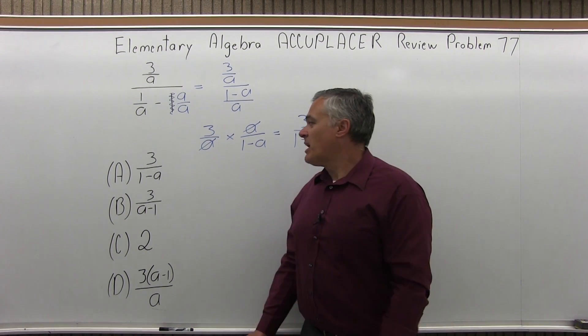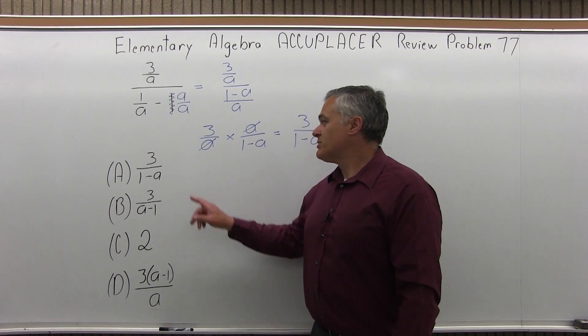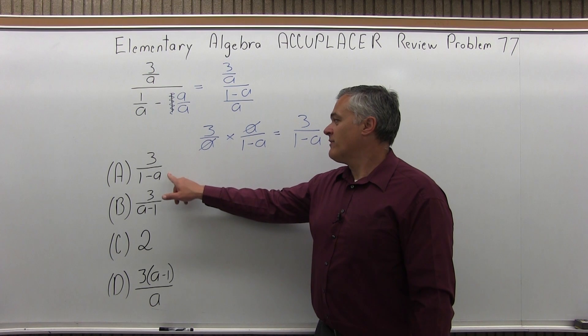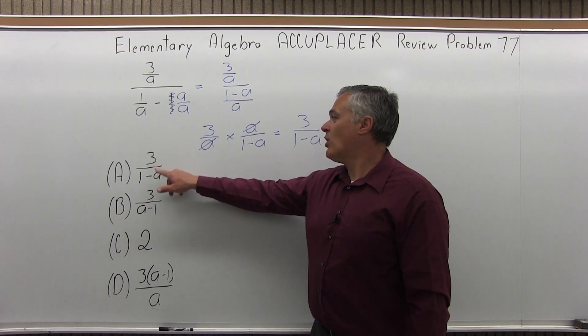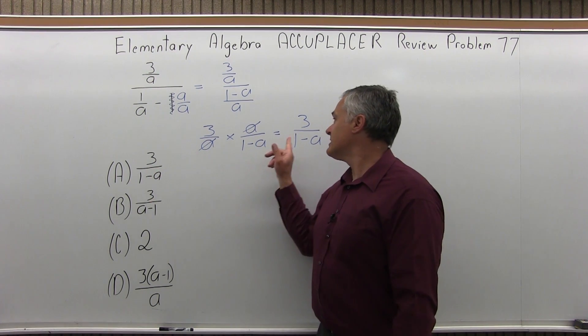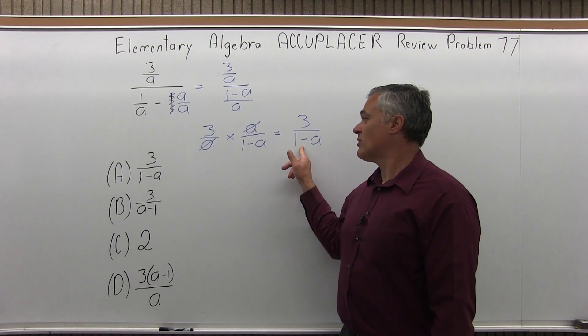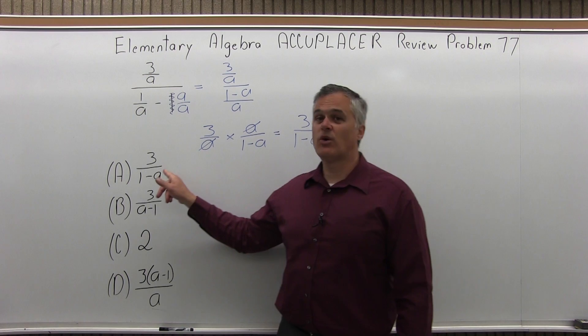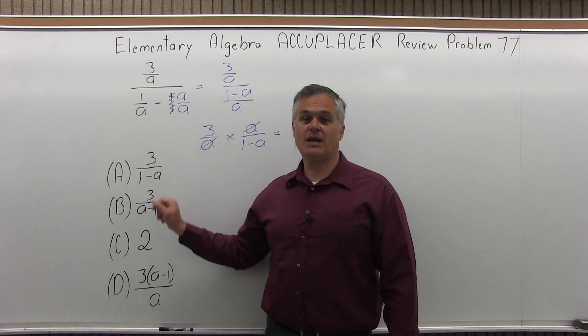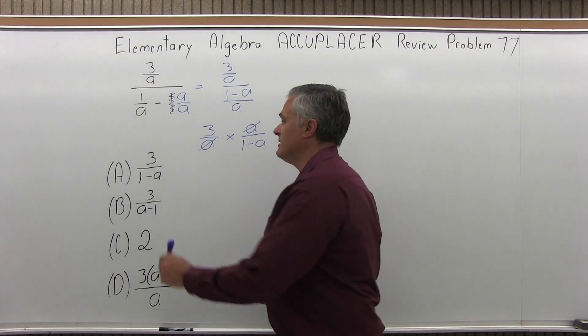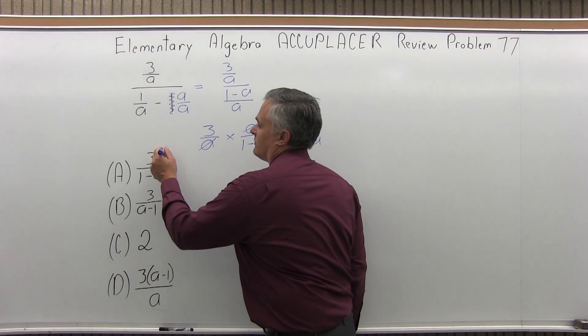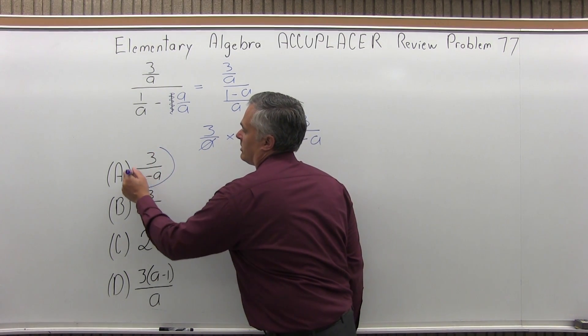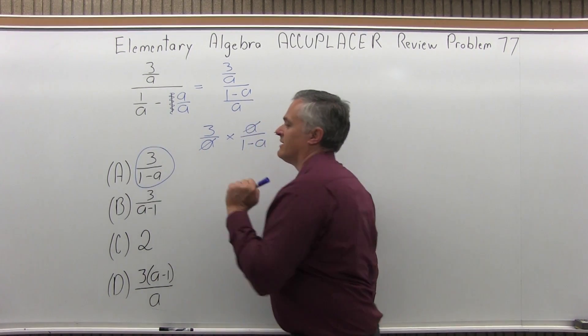As I look at my possible options, I have a perfect match with option A: 3 over 1 minus a. So option A is the answer for problem number 77.